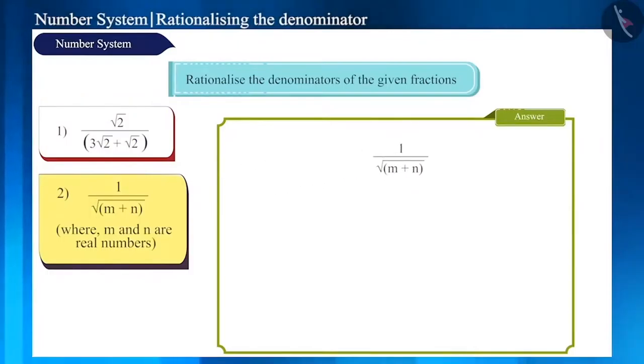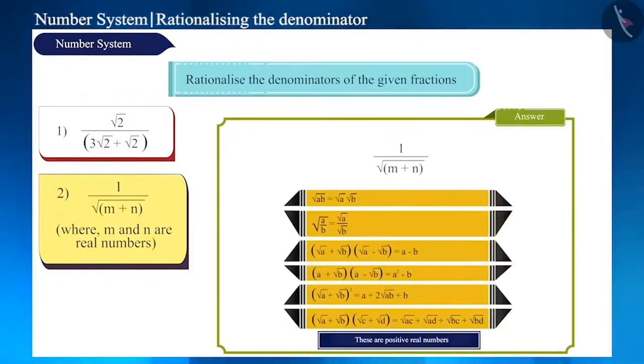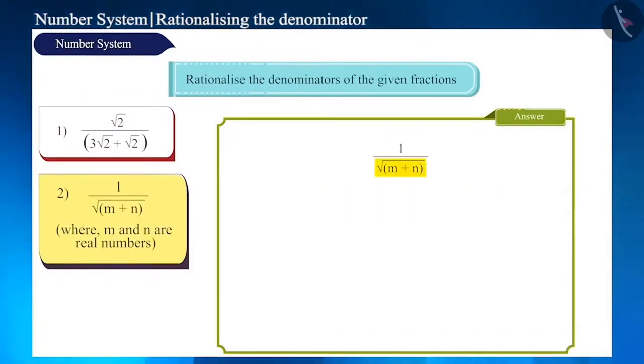Can you guess which identity should be used in the next question? Here, the denominator contains root of m plus n the whole. So,